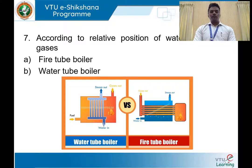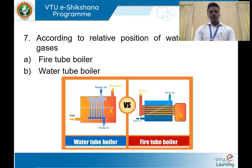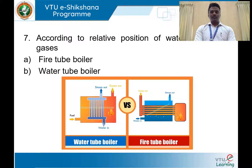The most important classification is based on the relative position of water and hot gases — we have fire tube boilers and water tube boilers. In a fire tube boiler, there are series of tubes placed inside the boiler shell and the hot gases produced from combustion are made to flow through those flue tubes, while water surrounds them. In a water tube boiler, water flows through the tubes and the hot gases pass around those water tubes. The Lancashire boiler is a fire tube boiler, and the Babcock and Wilcox boiler is a water tube boiler.